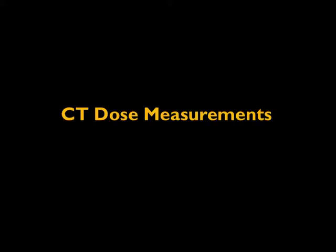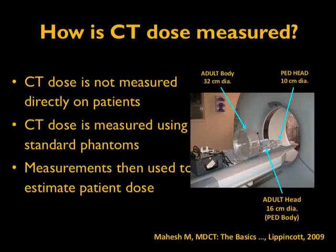Having that background, I want to discuss some basic physics of CT dose measurement. When discussing CT dose measurement, it is imperative to start with how CT dose is measured. The first caveat is that CT dose is not measured directly on patients. Even though we express CT dose to patients, all measurements are done using standard phantoms. Medical physicists use standard phantoms, measuring dose on the phantoms and then extrapolating to explain CT dose to the patient. Those measurements are then used to estimate the patient dose.